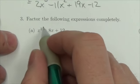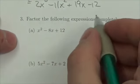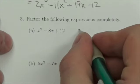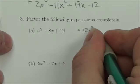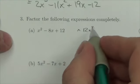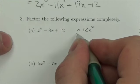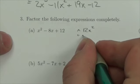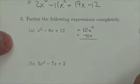What we've been doing here is we take that first term multiplied by that last term, so we're going to get a product of 12x². We're looking for two numbers whose product is 12x² but whose sum, when we add them together, is going to be negative 8x.